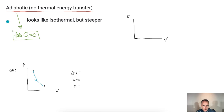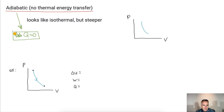Adiabatic means Q is zero. That means it's going to look like an isothermal curve on a PV diagram, except it's going to be steeper. We start with Q equals zero because it is adiabatic — we know this for sure.